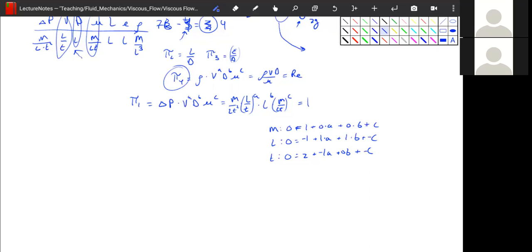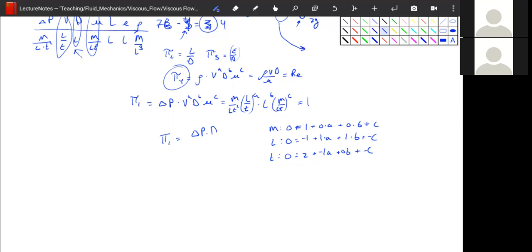Great. We can solve all these and we find out that our pi one is equal to delta P times D over mu times our velocity. Excellent.